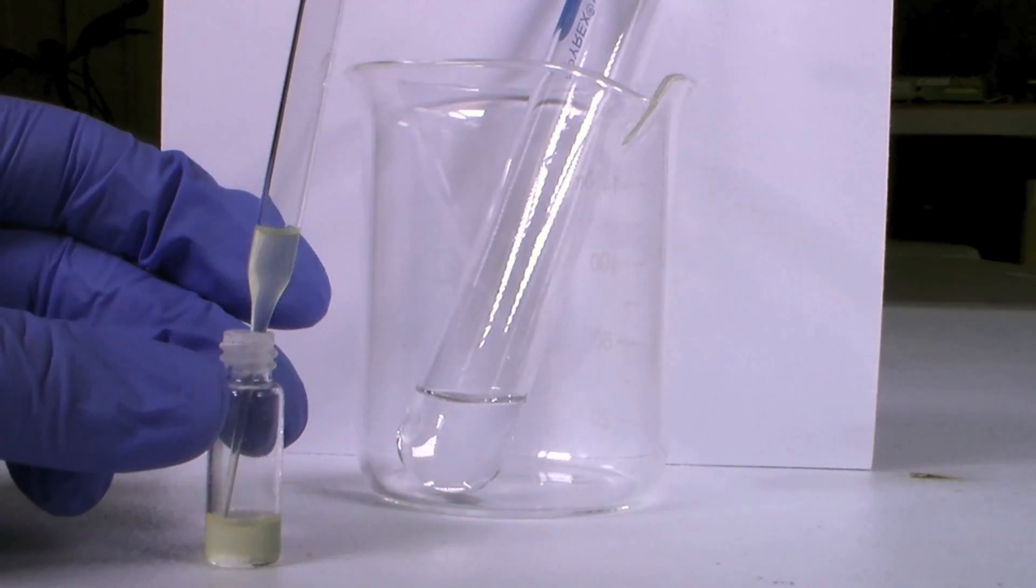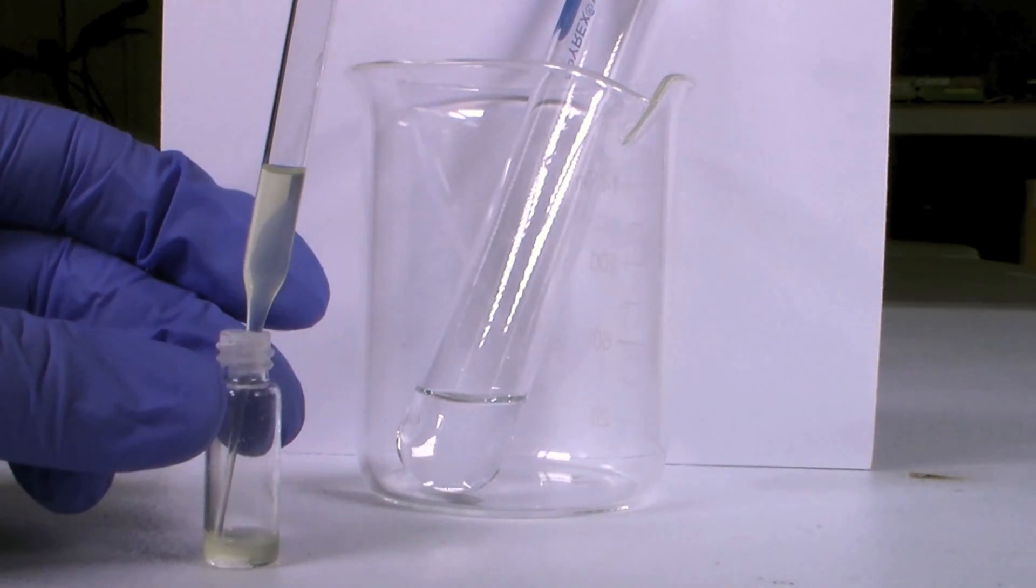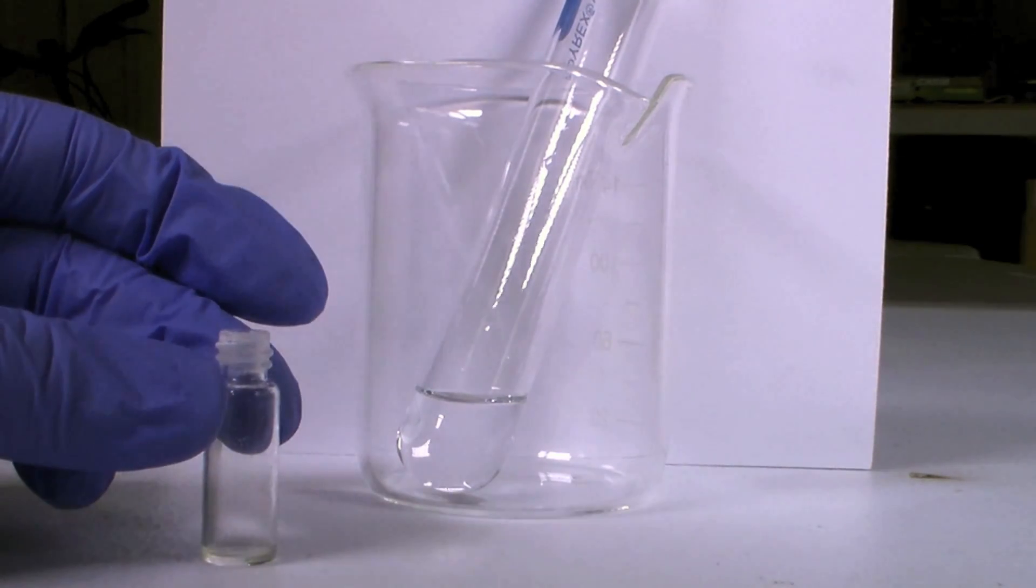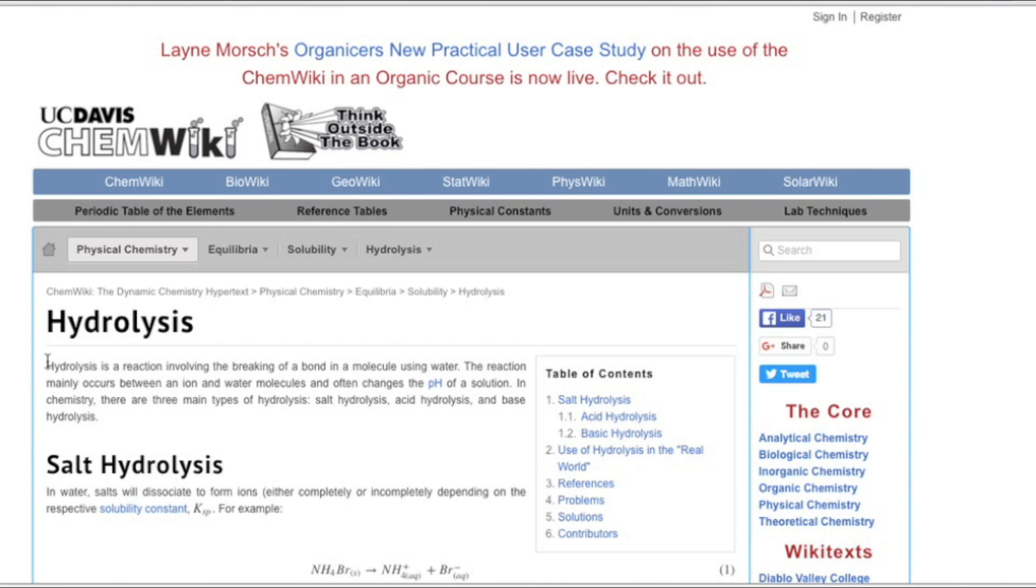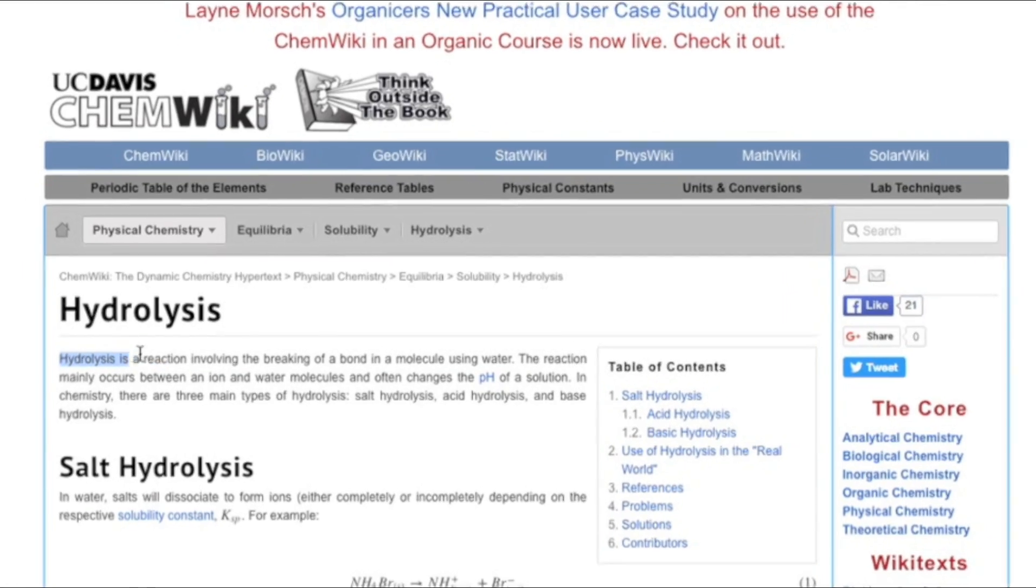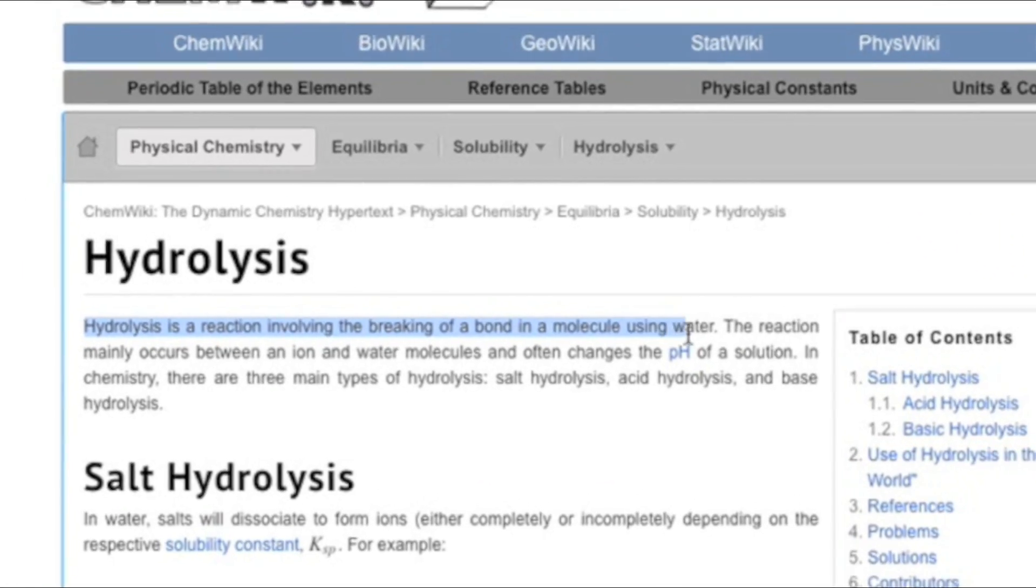This reaction is an example of a hydrolysis reaction. The term hydrolysis is used to describe reactions in which water breaks down other molecules. In this case the water is breaking down the silicon-chlorine bonds of silicon tetrachloride.